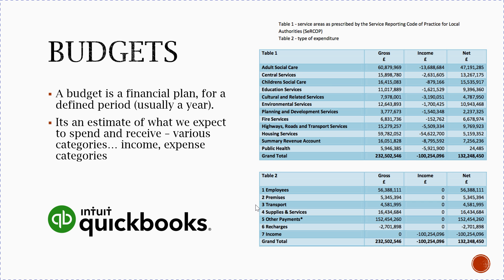A budget is a financial plan — again, it's a forecast and an estimate. Whereas a cash flow forecast might cover three to six months, budgets are usually done for a year, though they can also be on a quarterly or monthly basis. A budget is simply an estimate of what you expect to spend and receive, with expense and income categories.